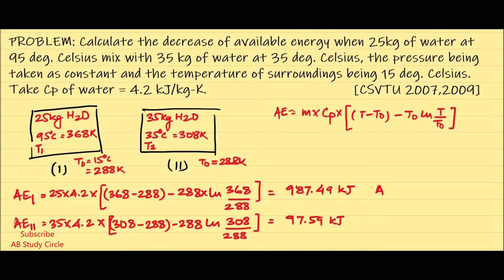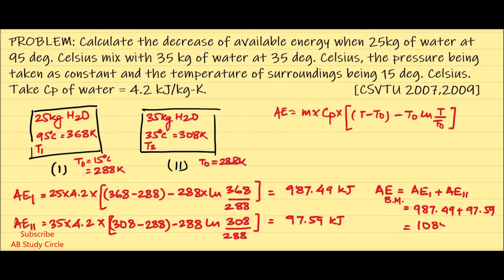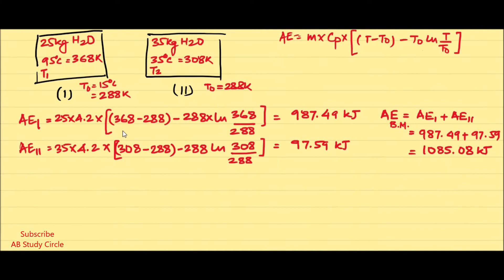The total available energy before mixing (AE_BM) is AE1 + AE2 = 987.49 + 97.59 = 1085.08 kJ.